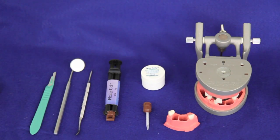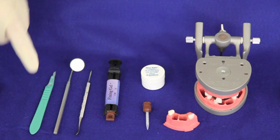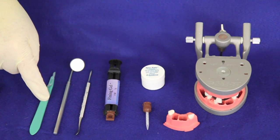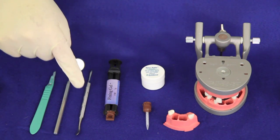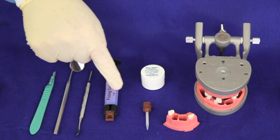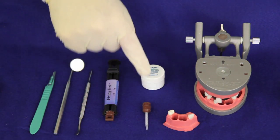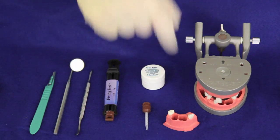These are the supplies that we need to mount a tooth in one of the removable segments. A sharp disposable scalpel, dental mirror, wax spatula, No. 7 wax spatula, fixing gel, the tip for it, apex putty, and the segment itself.